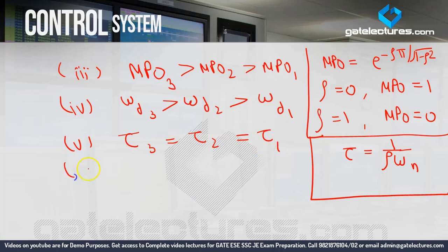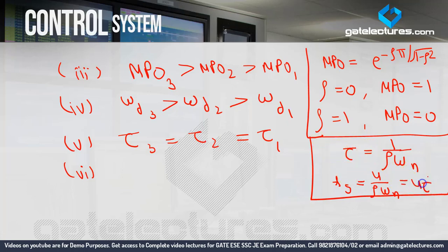Since tau is constant and the settling time formula for 2% tolerance is Ts = 4 upon zeta omega N, which equals 4 tau, if tau is constant then settling time is also constant. So Ts3 equals Ts2 equals Ts1.